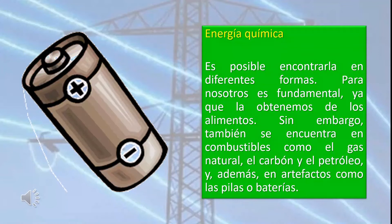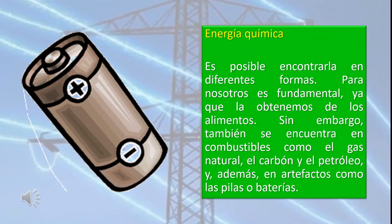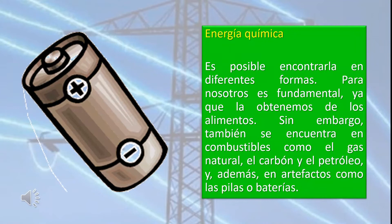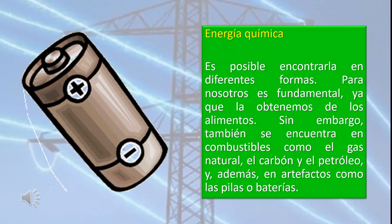La energía química es posible encontrarla en diferentes formas. Para nosotros es fundamental, ya que la obtenemos de los alimentos. Sin embargo, también se encuentran combustibles como el gas natural, el carbón y el petróleo. Además, la encontramos en artefactos como las pilas o baterías.